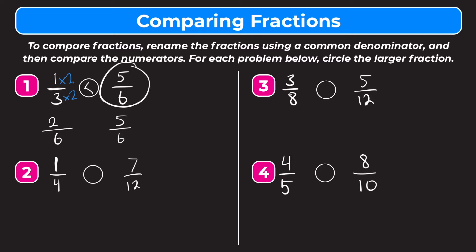Let's try number two. We have one-fourth and seven-twelfths. The common denominator here is going to be twelve. In order to change one-fourth, we have to multiply the numerator and the denominator by three. That gives us three on the top over twelve on the bottom. Seven-twelfths is already over twelve, so we can bring seven-twelfths down. Since they're both over twelve, we know that seven is greater than three, so seven-twelfths is going to be larger than three-twelfths, which also means that seven-twelfths is larger than one-fourth. Put our symbol there, circle seven-twelfths.